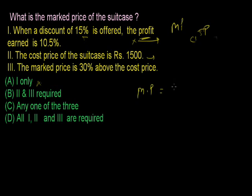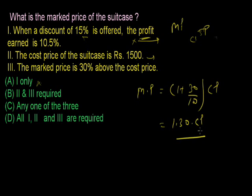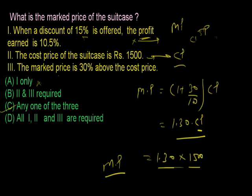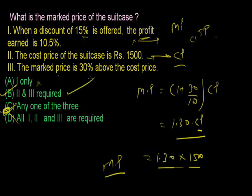Statement 3 says market price is 1.30 times the cost price. If I combine statement 2 (cost price = 1,500) with statement 3 (market price = 1.30 × cost price), then market price = 1.30 × 1,500 — and I get the market price. So using statements 2 and 3, I get the answer. I don't require statement 1 because it deals with profit and selling price, which I don't need since I already know the cost price and its relationship to the market price. Only statements 2 and 3 are required.